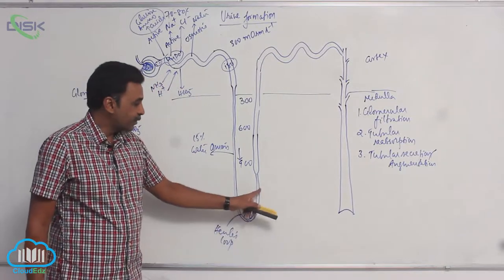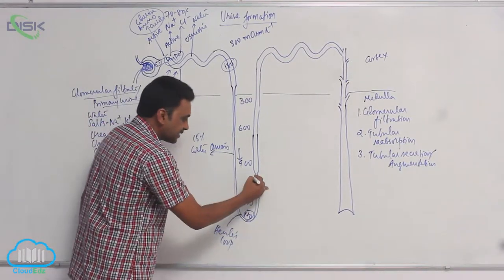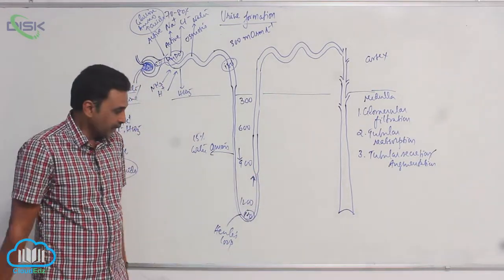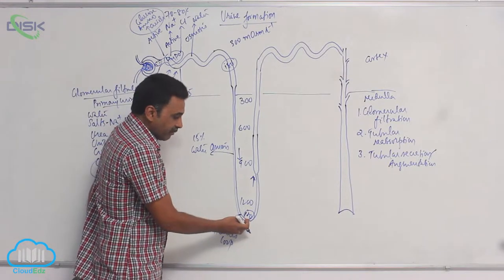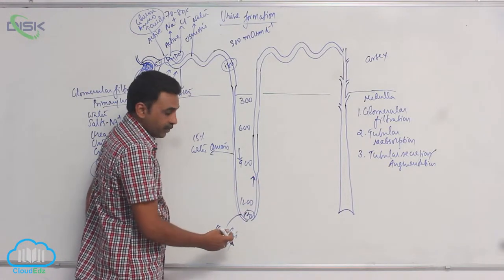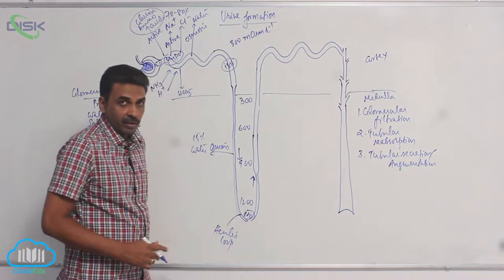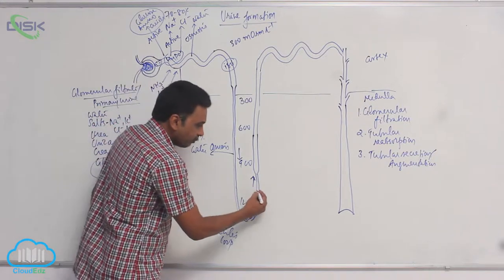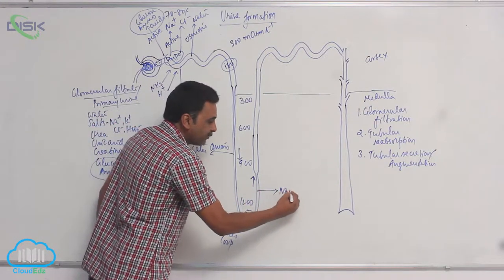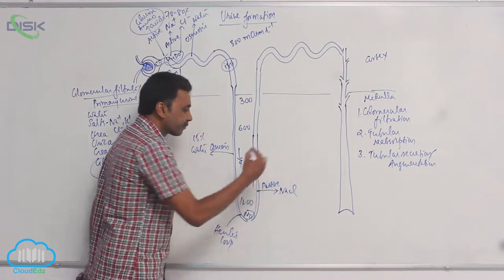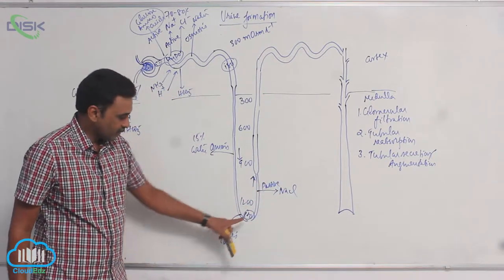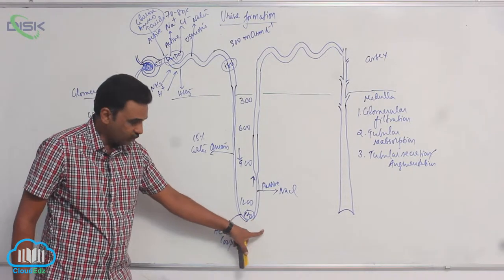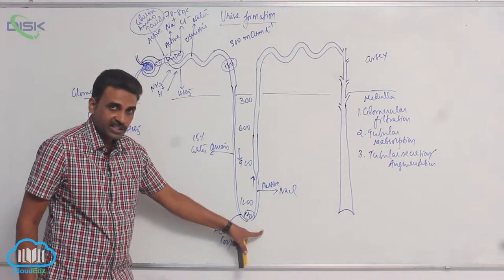Such fluid then enters the ascending limb, which has a thin segment and a thick segment. When the fluid enters the ascending limb, its concentration is 1200 mOsm/L, equal to the medullary interstitial fluid concentration. But as concentration outside gradually reduces going upward, some sodium chloride is passively transported outside.